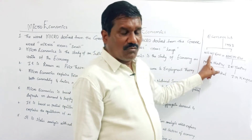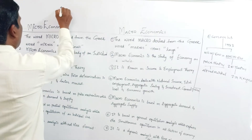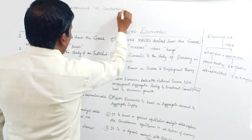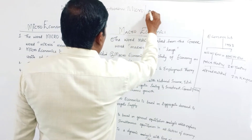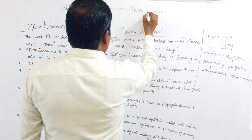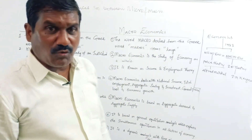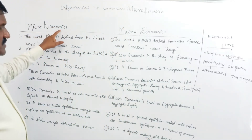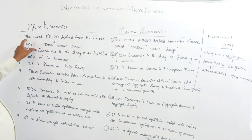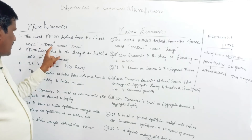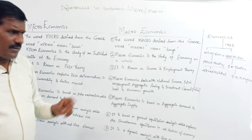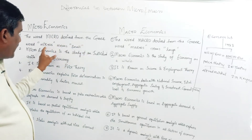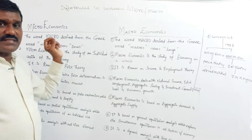What is microeconomics? What is macroeconomics? What are the differences between micro and macroeconomics? The word 'micro' is derived from the Greek word 'mikros.' The English word microeconomics is derived from this Greek word.